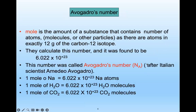The mole is the amount of substance that contains a specific number of atoms, molecules, or other particles. For carbon-12 isotope, scientists counted the atoms and found the constant 6.022 × 10²³, which is called Avogadro's number. This constant applies to sodium, water, carbon dioxide — whether it is an element or a compound, the Avogadro number is the same.